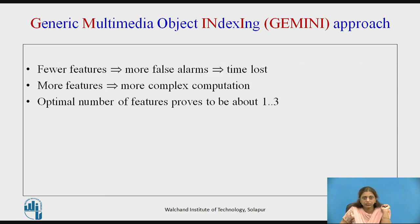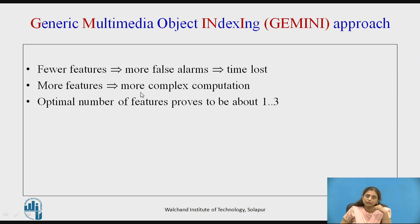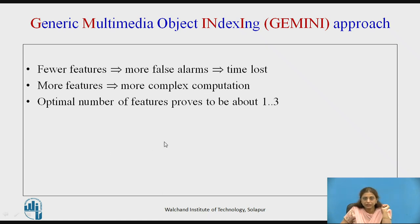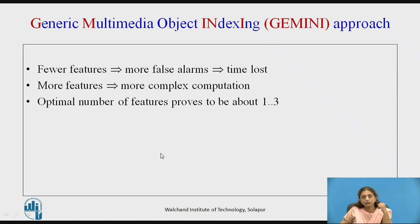In the Gemini approach, fewer features may lead to more false alarms and wasted time, while more features lead to more complex computations. One must identify the optimal number of features; generally 1 to 3 features give the best results for optimal performance.